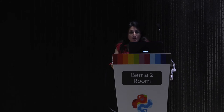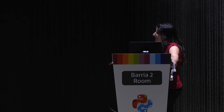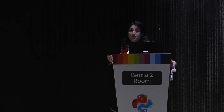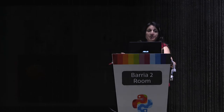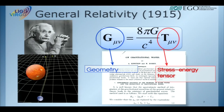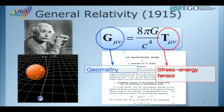So let's start. What is the challenge? In 1915, this guy that maybe you know — Albert Einstein — introduced the theory of general relativity. He said that the geometry of space-time is linked to the content of mass and energy over the space-time. There is this strict relation expressed in a beautiful formula that links the geometry to the mass-energy.